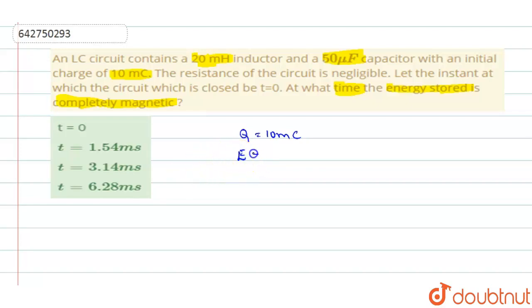So what is the energy stored inside the capacitor in this situation? It will be Q square by 2C. So Q will be 10 into 10 power minus 3 whole square divided by 2 into C, the capacitance. Capacitance is 50 into 10 power minus 6. So this when you simplify it, E comes out to be 1 joule.